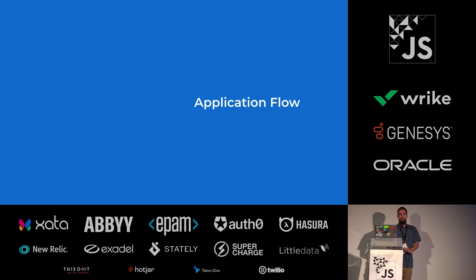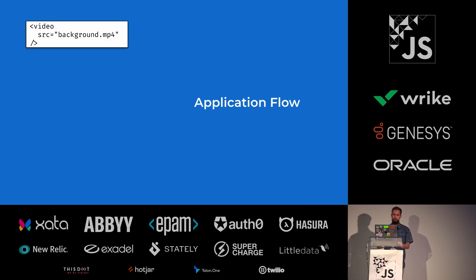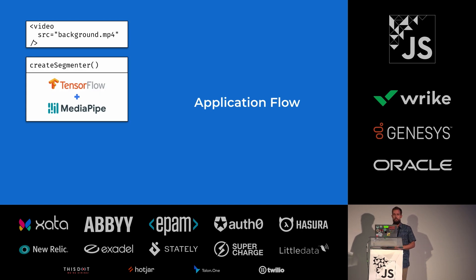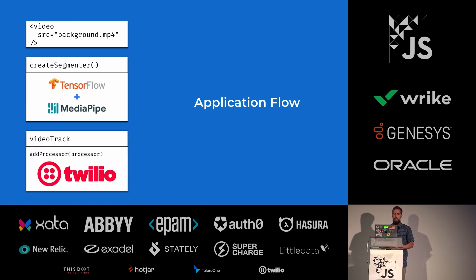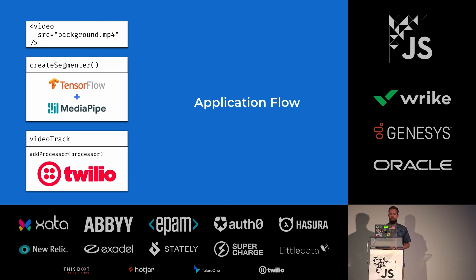So to build the app, we're going to need to connect several modules. We'll start with an HTML video element that contains our virtual background — this doesn't actually have to be rendered to the DOM. Next, we need a function called createSegmenter that will initialize our machine learning runtime, connecting TensorFlow with our MediaPipe selfie segmentation model, and it returns a segmenter. The segmenter is a function from TensorFlow that can receive an image and return segmentation data about the image. And finally, we'll create a video track using the Twilio video library. This video track will use input data from the webcam and can be published over WebRTC to a live video chat room.